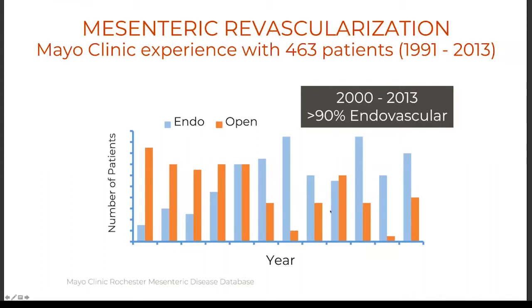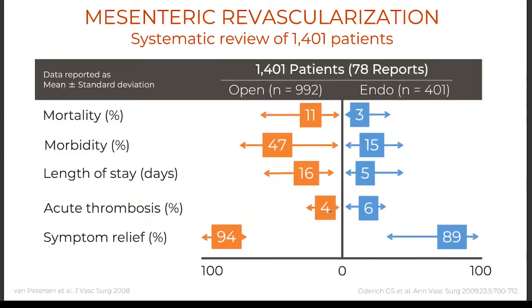When we look at large pools of data, as happens with most endovascular revascularizations, we see less mortality, less morbidity, shorter length of stay, and perhaps slightly less symptom relief with endovascular — although there is a bias of a therapeutic trial. Patients with atypical symptoms get stented to see what happens, while there is a much higher threshold to recommend open revascularization. That explains some of the difference in efficacy.